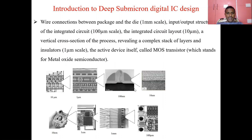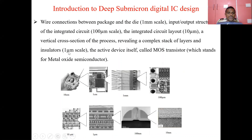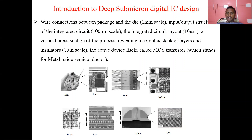Looking at the different diagrams, we can see how sizes are reduced: starting from 10 centimeters, then one centimeter, one millimeter, 100 micrometers, 10 micrometers, one micrometer, 100 nanometers, and now it is 10 nanometers. There is a continuous decreasing in size — even in terms of interconnections and transistor sizes, these will be reduced.